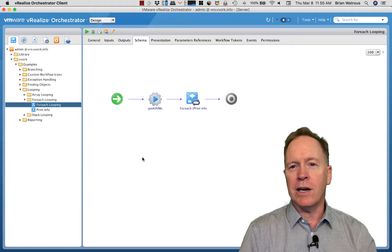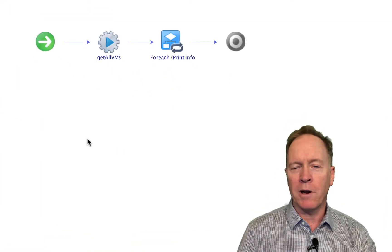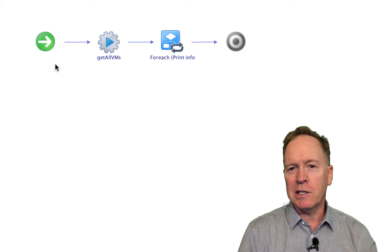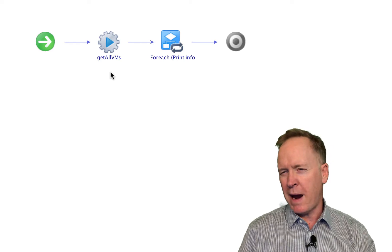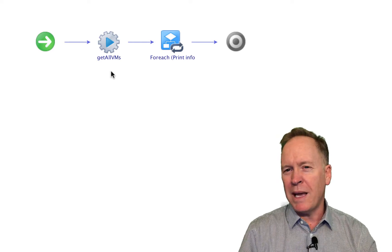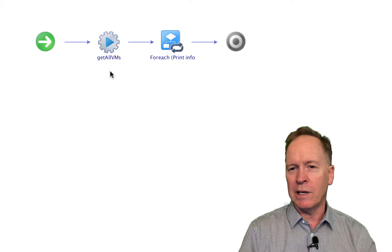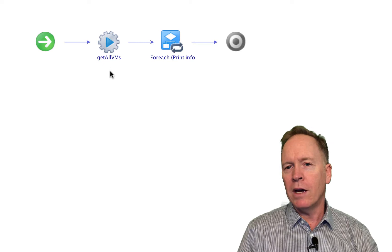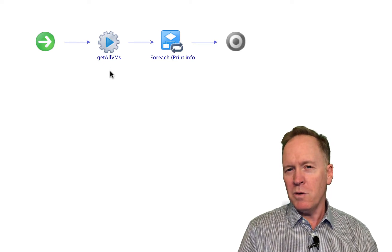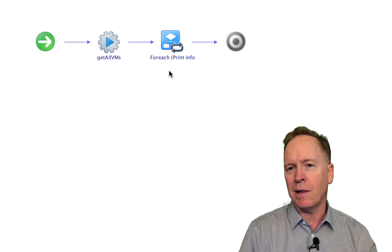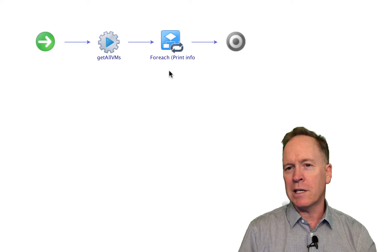As you can see here, I'm looking at a workflow. The workflow begins with the start schema element, and then it goes to this get all VMs element — we talked about that back in video number 21. The basic thing this action does is go out to your vCenter server and get a list, specifically an array, of all the virtual machines in your entire environment. We're going to feed that array into this next schema element, which is a FOREACH schema element. You can tell it's a FOREACH because of the icon.